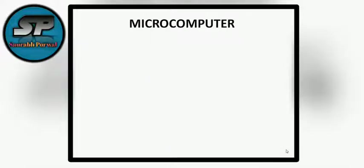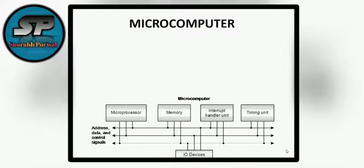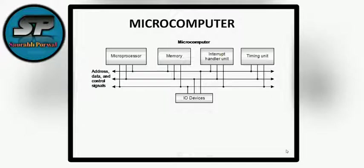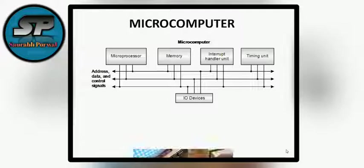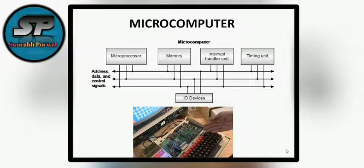What is a microcomputer? A microcomputer is when the processor along with all other equipment — like memory, interrupt handler unit, timing unit, and input-output devices — are all combined and placed together. When combined in such a way, it can be called a microcomputer board.